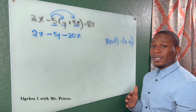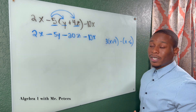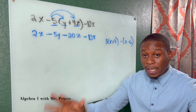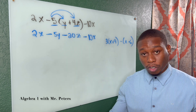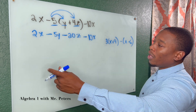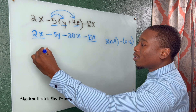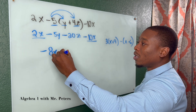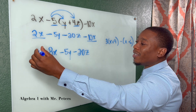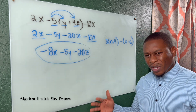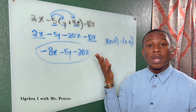Because negative 10x is not inside the parentheses, it stays the same — we do not multiply negative 5 by 10x. Anytime you distribute, you should always know you're going to combine like terms. Notice that these are the only two like terms. When I simplify, I get negative 8x minus 5y minus 20z. At this step, we're done with the problem because there is nothing else to combine.